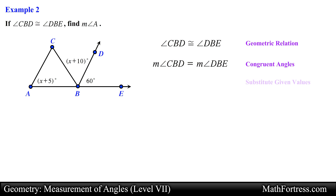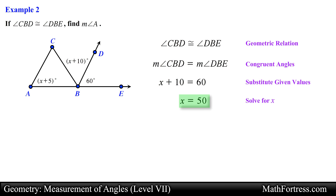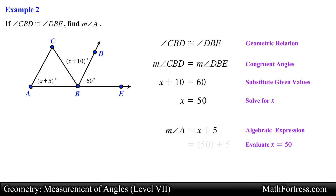We substitute the numerical and algebraic expressions for each angle. Solving for x, we obtain x equals 50. The last step is to determine the measurement of angle A, so we substitute the value of x into the algebraic expression for angle A. Evaluating and simplifying, we obtain 55 degrees as our final answer.